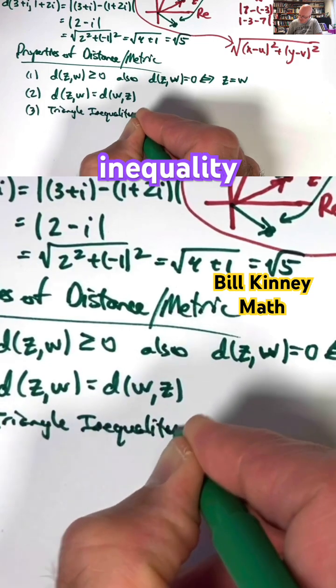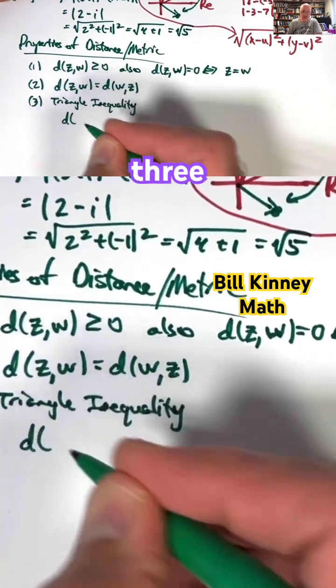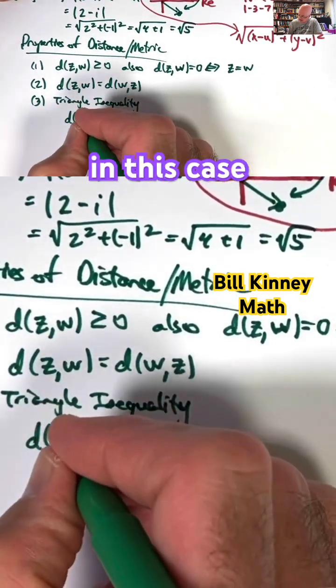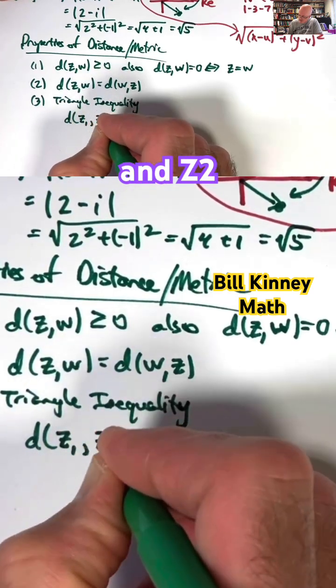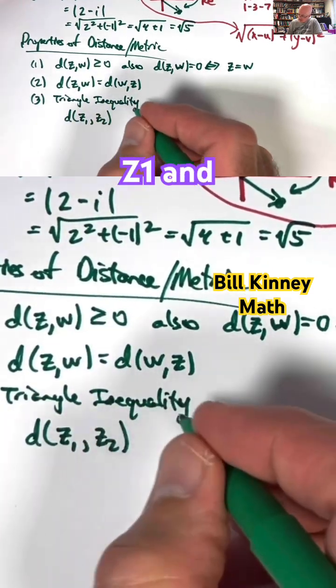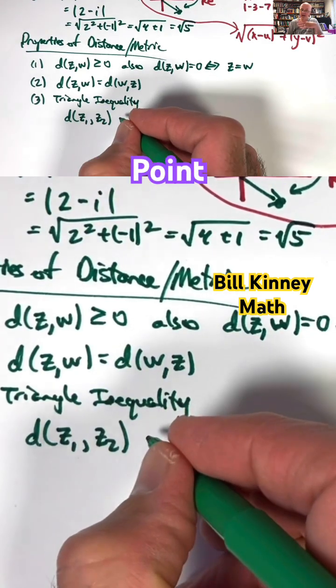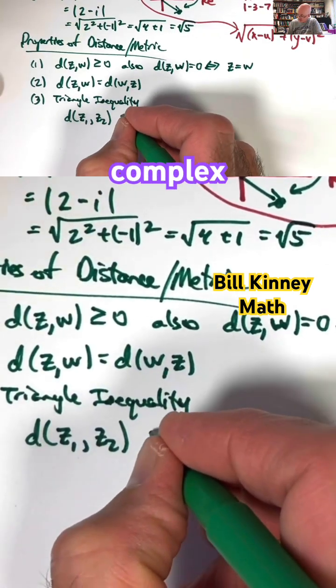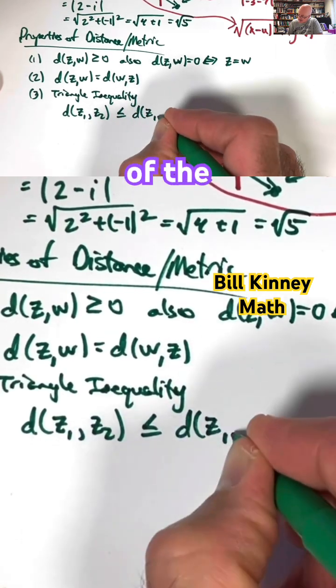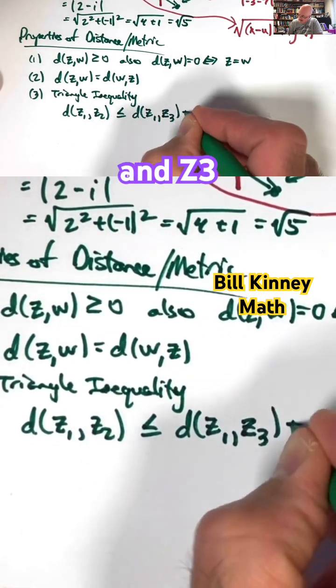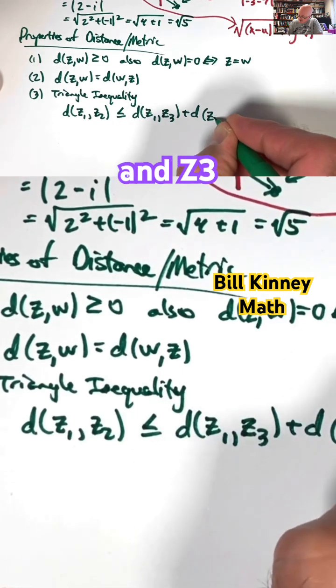Triangle inequality. You have three complex numbers in this case. The first two we'll call Z1 and Z2. The distance between Z1 and Z2, if I've got a third point, any other third complex number Z3, is less than or equal to the sum of the distances between Z1 and Z3 and Z2 and Z3.